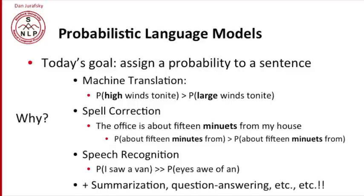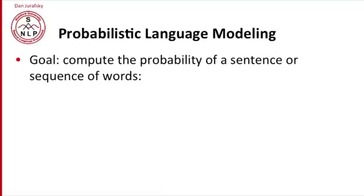And it turns out language modeling plays a role in summarization and question answering, really everywhere. So the goal of a language model is to compute the probability of a sentence or a sequence of words. Given some sequence of words w1 through wn, we're going to compute their probability P(W). And we'll use capital W to mean a sequence from w1 to wn.